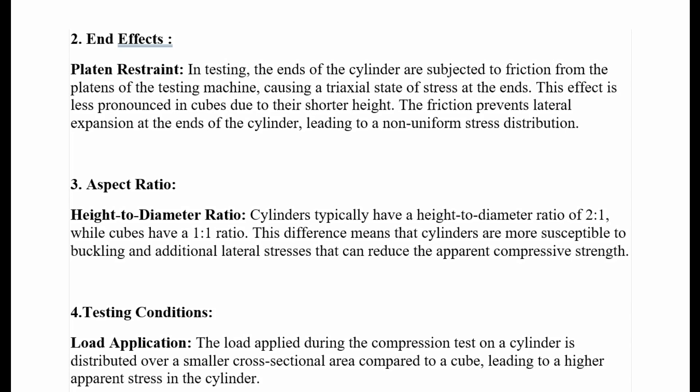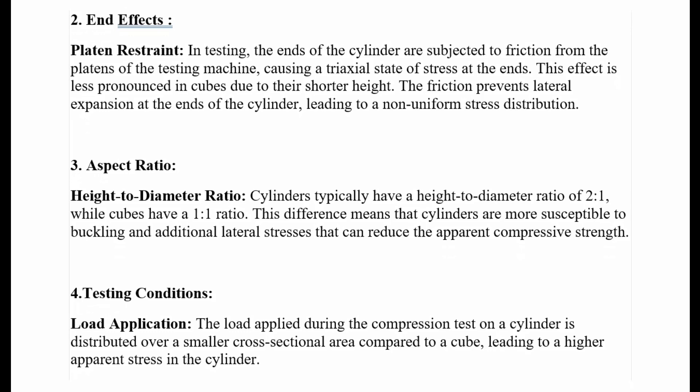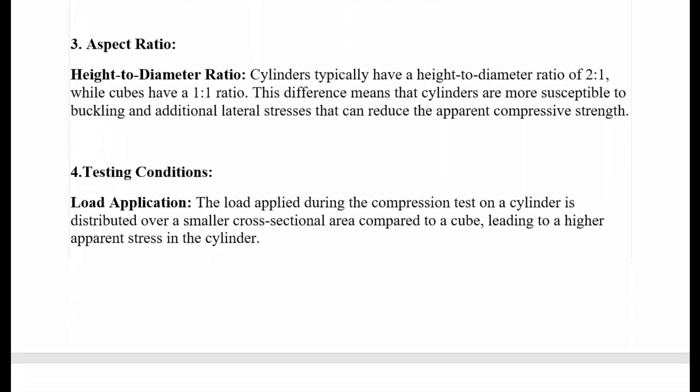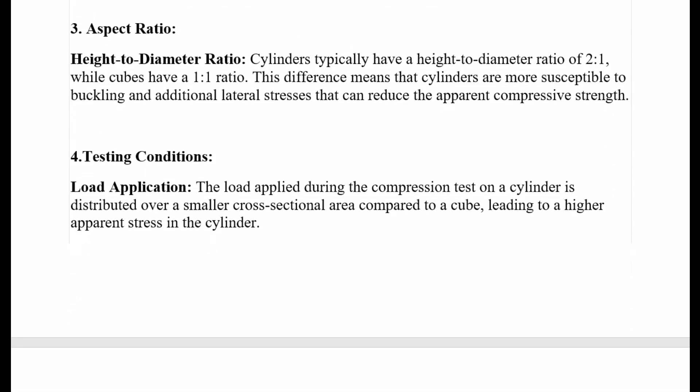Aspect ratio — height-to-diameter ratio: cylinders typically have a height-to-diameter ratio of 2 to 1, while cubes have a 1 to 1 ratio. This difference means that cylinders are more susceptible to buckling and additional lateral stresses that can reduce the apparent compressive strength.